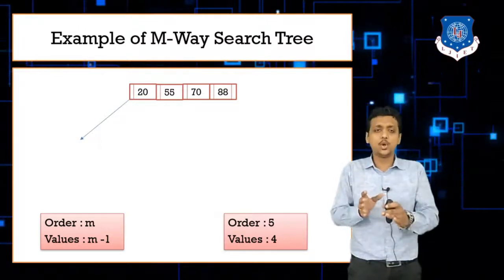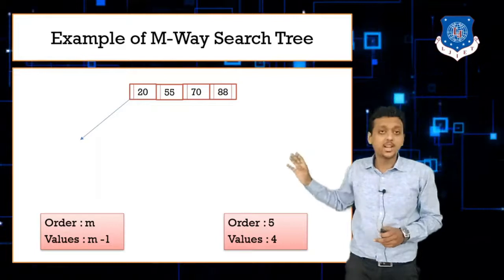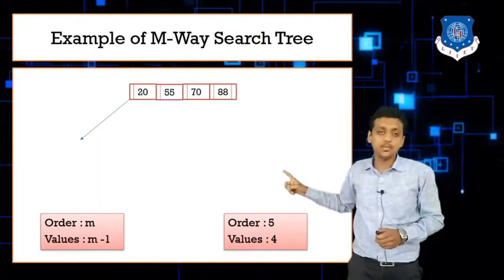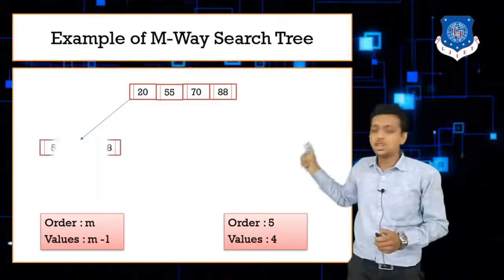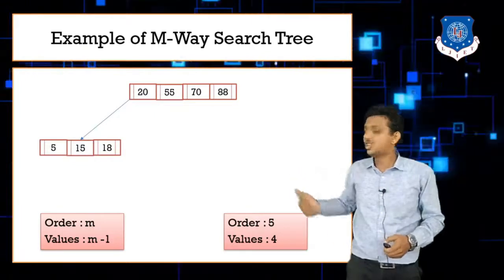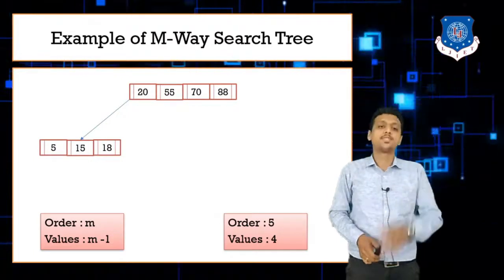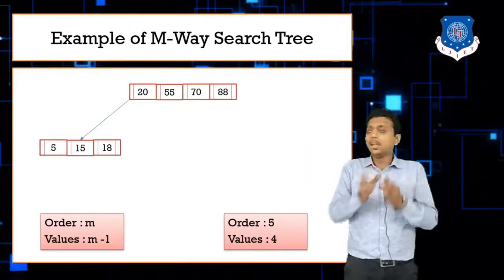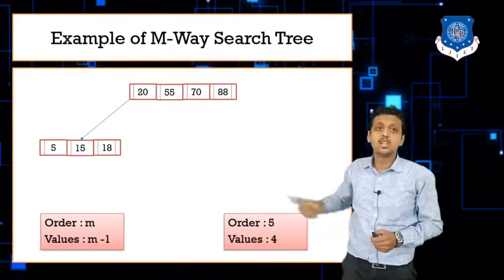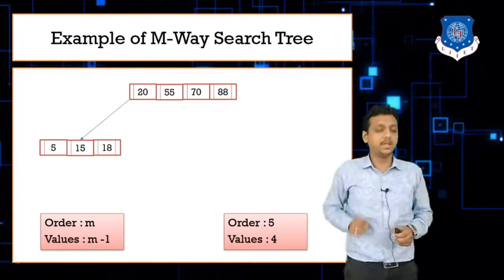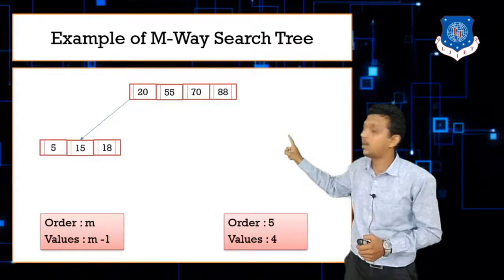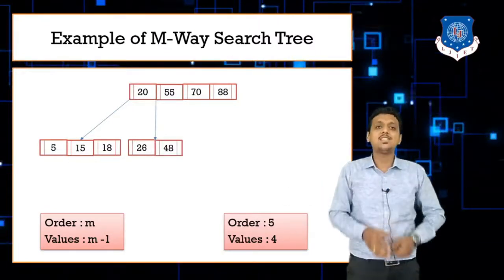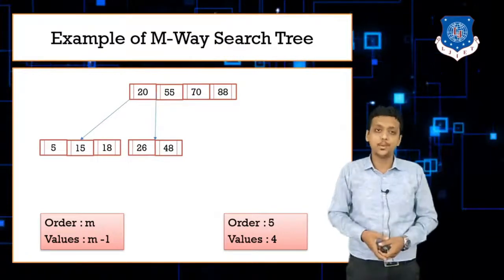The left pointer should point to lesser values and the right pointer to greater values. The left pointer of 20 points to values lesser than 20 — the child contains 5, 15, and 18. The pointer between 20 and 55 must contain values greater than 20 and less than 55 — here it points to 26 and 48.